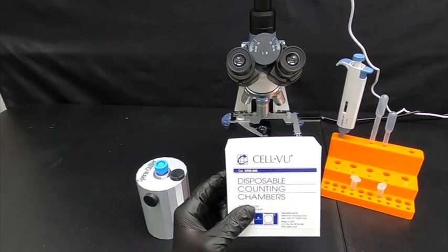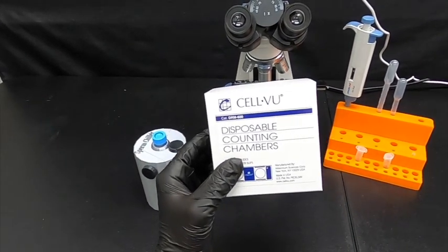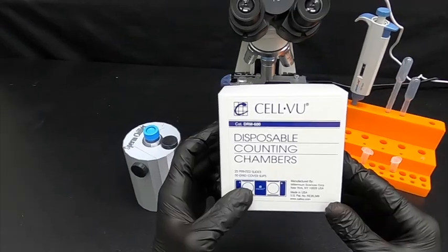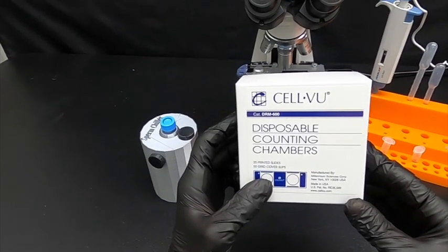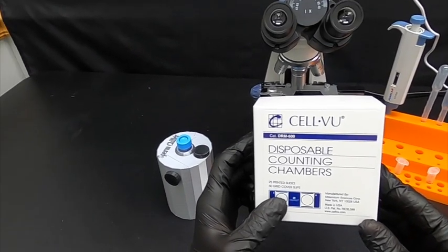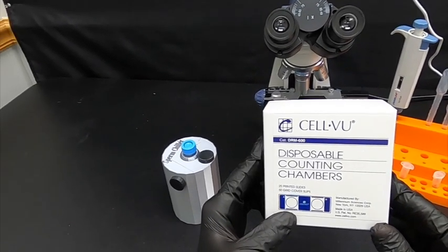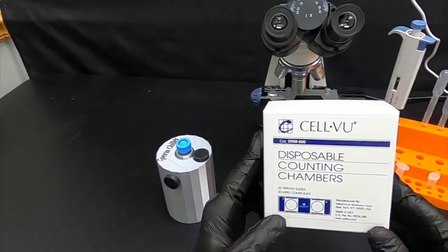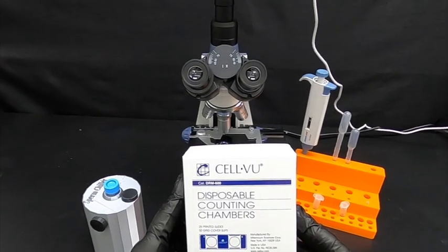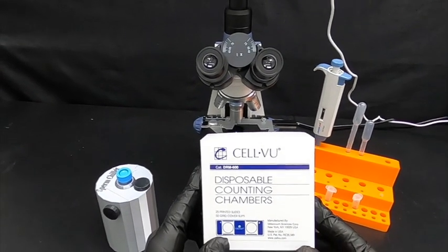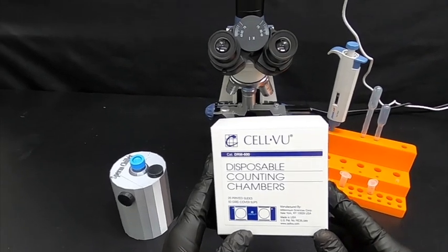Today we're going to demonstrate the use of CellView disposable semen counting chambers. These are used to get an estimation of concentration in millions per milliliter. This will not give you percentages on motility or progressive motility, but it will give you a fairly accurate count of your concentration, either via raw or extended samples.